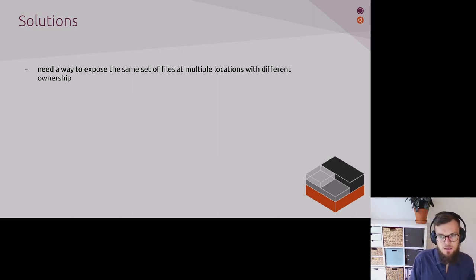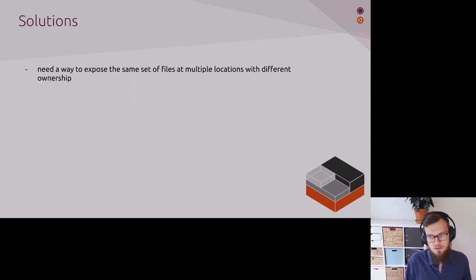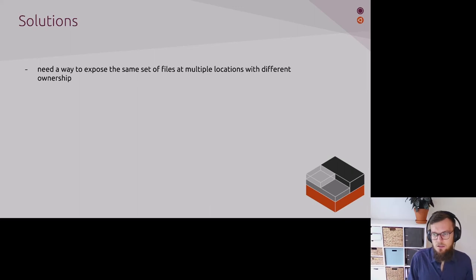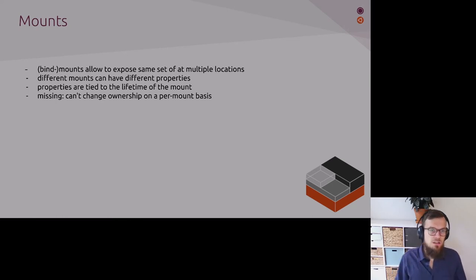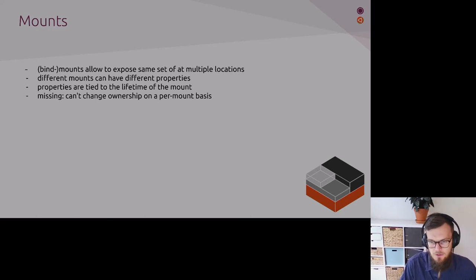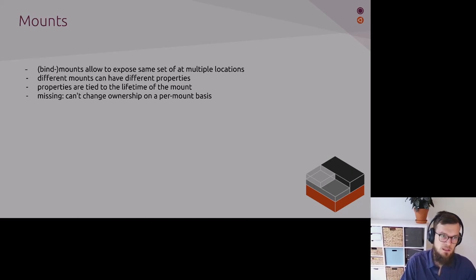So it seems we have reached an impasse. Our current toolset has too many limitations to handle these use cases elegantly. However, the idea of ID map mounts allows us to solve them. In order to solve these use cases, we obviously need a way to expose the same set of files at multiple locations but with different ownership. If we look closely, we don't really need to reinvent a lot of things, because Linux already provides a way to expose the same set of files at multiple locations in the form of bind mounts.